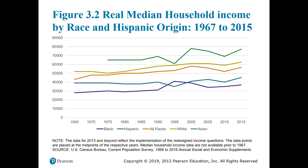Figure 3.2 looks at median household income data from 1967 to 2015 by race and Hispanic origin, and what you'll notice is that being Asian or white correlates with significantly higher income than Black and Hispanic populations.